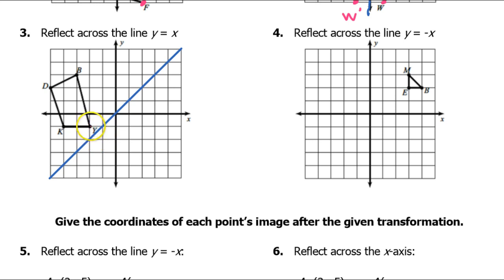Look at point Y — it is half of a square diagonally away from the reflection line, so going half a square diagonally on the other side gives the mirror image. Now look at point B — it is three diagonal squares away, so going one, two, three diagonal squares away on the other side gives B prime. Point K is a square and a half away diagonally, so going half a square and then one more gives K prime.